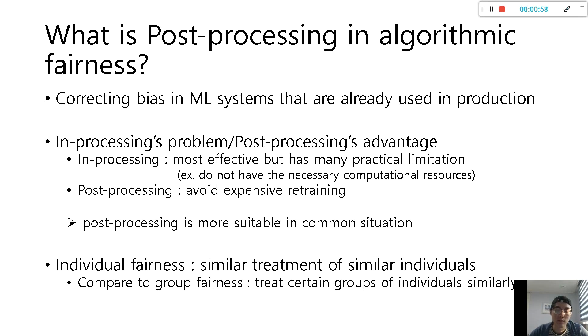What is post-processing in algorithmic fairness? Post-processing is correcting bias in machine learning systems that are already used in production. In-processing method is more effective, but it has many limitations like it needs lots of computational resources. On the other hand, post-processing method has an advantage in avoiding expensive retraining because it is processed using only output of model, not the model directly.